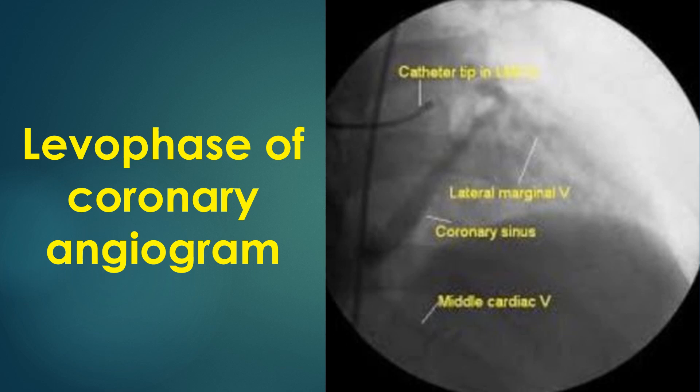The levophase of the angiogram is obtained when you continue the recording until the contrast passes from the arterial tree through the capillaries to the venous system. Alternatively, you may start recording a little late after the coronary injection to the approximate time for the levophase, but in this situation there is a chance of missing the initial part of the levophase.